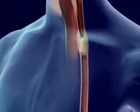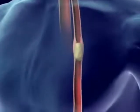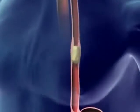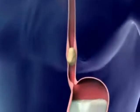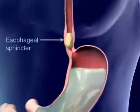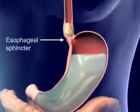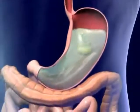Food goes from the pharynx to the esophagus and moves down by peristalsis. The peristaltic wave reaches the esophageal sphincter and food enters the stomach.